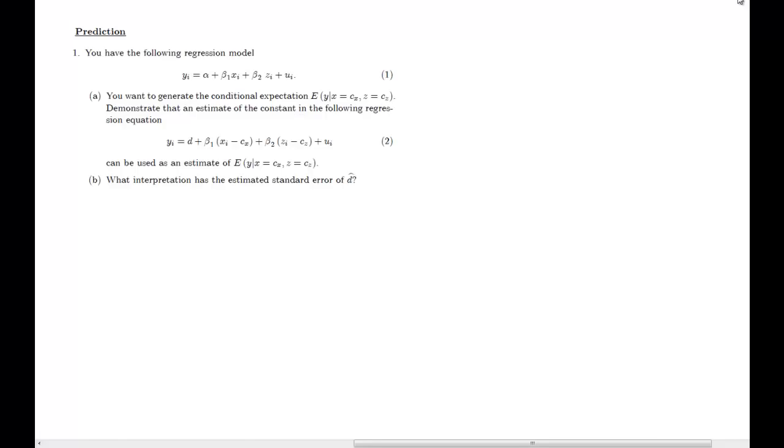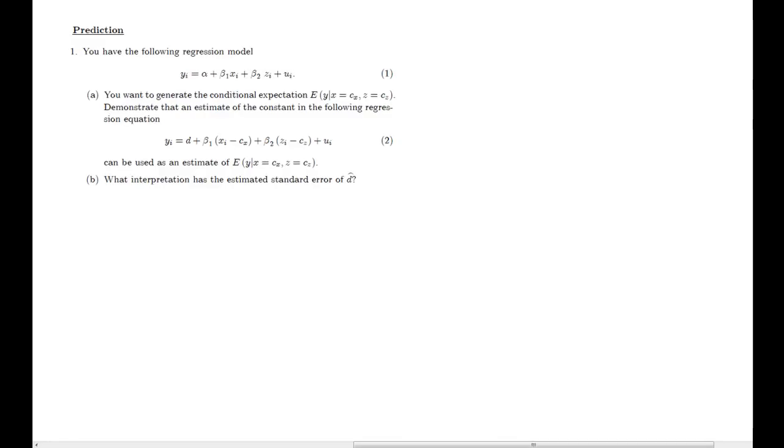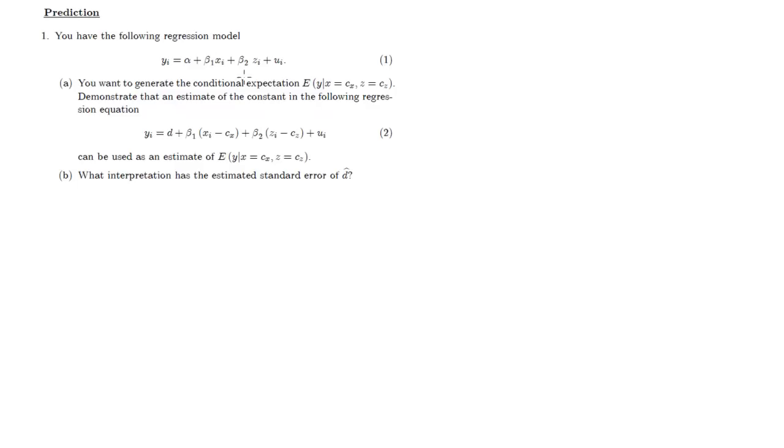So this is the prediction question for the Ecomatrix exercise. Let's have a look at the question. We have a regression model, and that is just very standard, has two explanatory variables x and z.